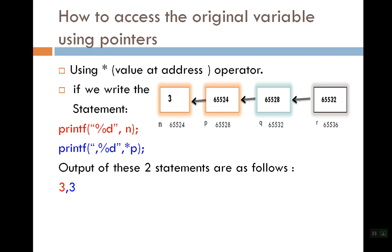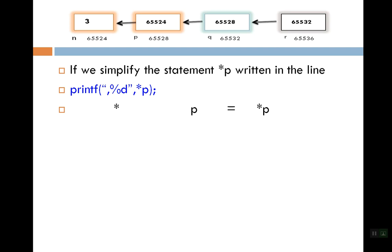Now, how can we access the variable through these pointers — we will see this on this slide. The star operator is our value-at-address operator. To use the value-at-address operator, we access our variable through pointers. If we write printf %d, n, then this is a normal statement that simply prints the value of n. The output shown in red comes from this first line. The next line has printf %d, star p, which also gives output 3. Let's see how.